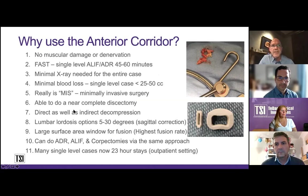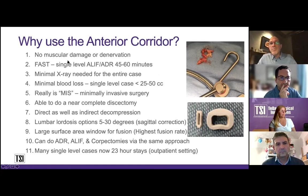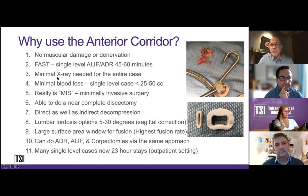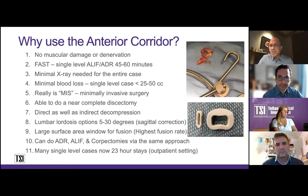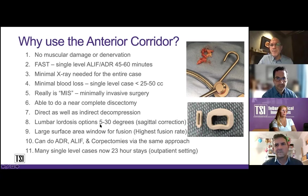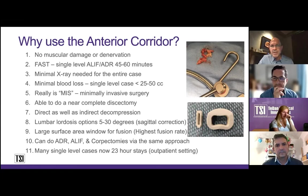This is an actual page I give patients in the office explaining why the spine surgeon is going anterior. The reasons are great: you don't damage any muscle — for standalone anterior or artificial disc; fast operation, 45 to 60 minutes for a single level; average X-ray time is 10 seconds; minimal blood loss, usually 25cc for an ALIF at any level; I consider it MIS with almost a near-complete discectomy. You can do direct decompression, indirect decompression with large cages, and control lordosis anywhere from 5 to 30 degrees. Extremely high fusion rates. And we're now doing many of these operations on a 23-hour stay basis.